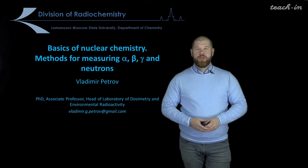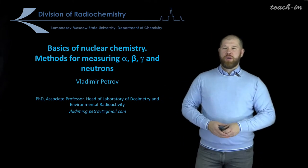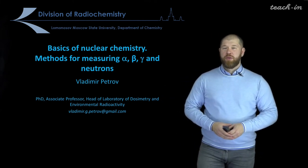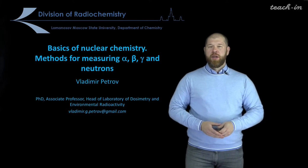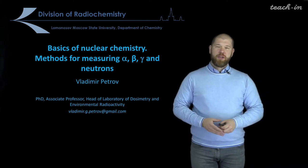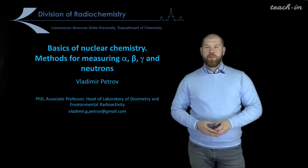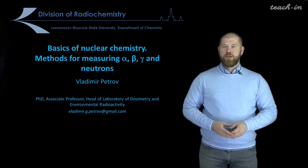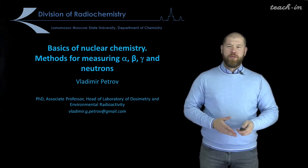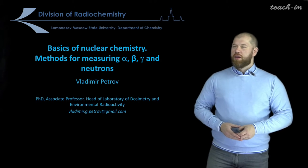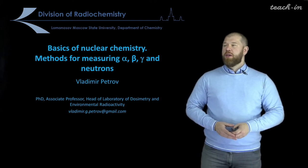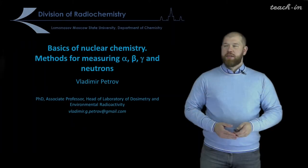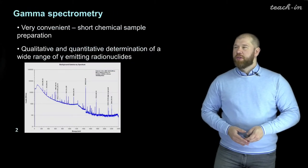Hello dear colleagues. Today we will continue our topics on the measurement of ionizing radiation, and today we will talk specifically about the methods for registration and identification of alpha, beta, and gamma quanta, and also neutrons. So let's start with the gamma spectrometry.